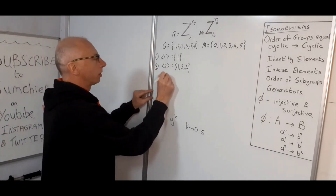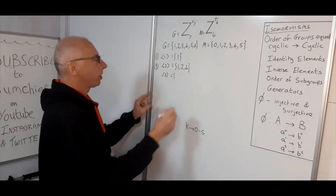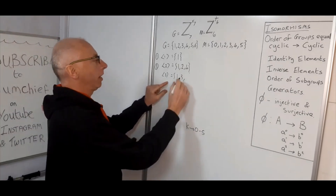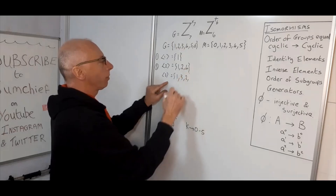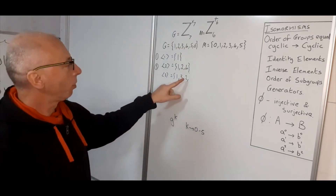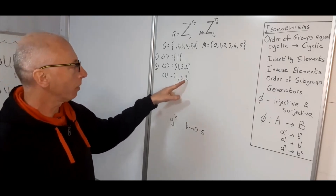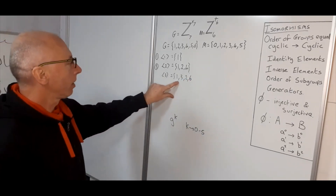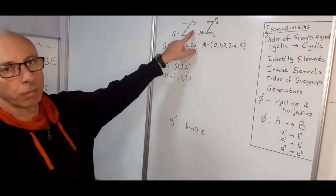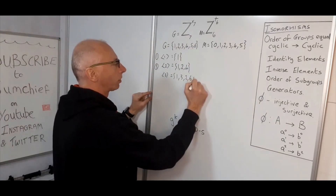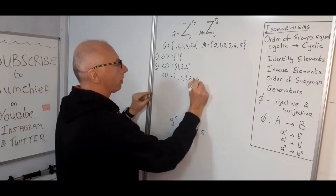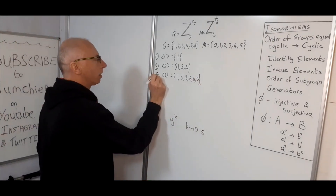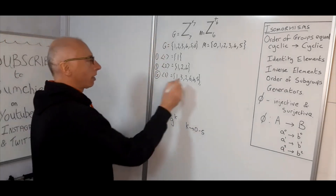Now element three: three to the zero is one, three to the one is three, three squared is nine modulo seven which gives two. Then multiplying by three each time: two times three is six, six times three is eighteen modulo seven gives four, and four times three is twelve modulo seven gives five. So three generates the whole group G — we've found a generator.